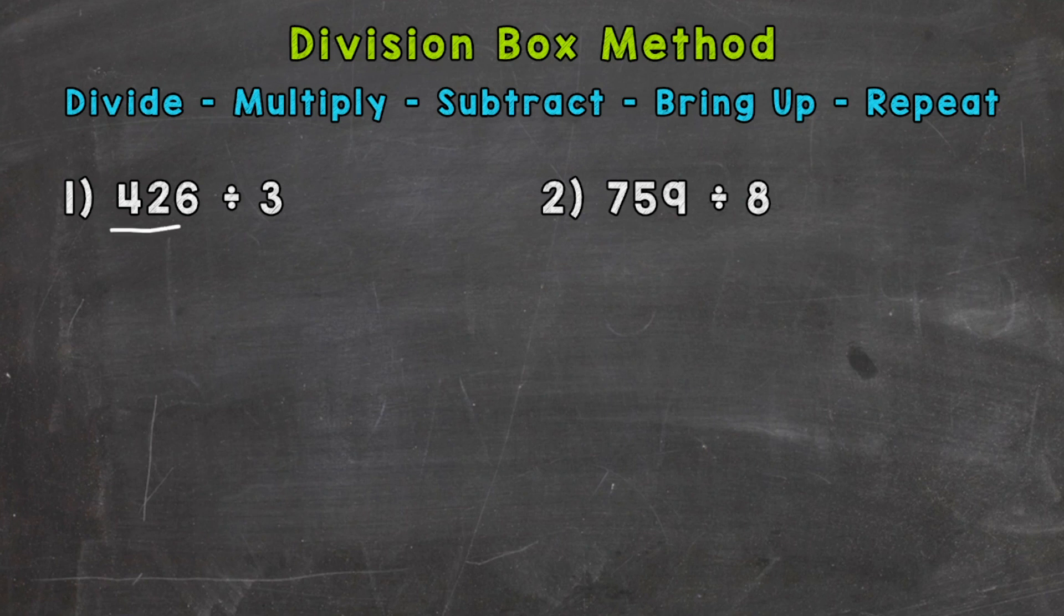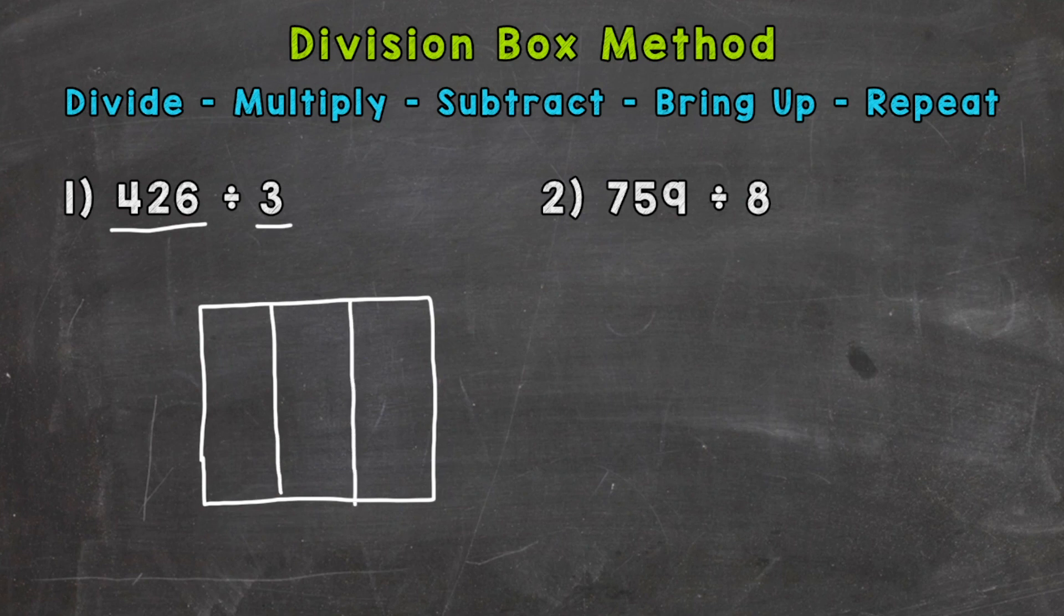So 426 this is our dividend. It's the number being divided or split up and we are dividing by three which is our divisor. So we start the box method by drawing out a rectangle here. Now this rectangle is going to be split into three sections for each of the digits for 426. So three sections here and we're going to put a digit in each one of those sections. So the four, the two, and the six.